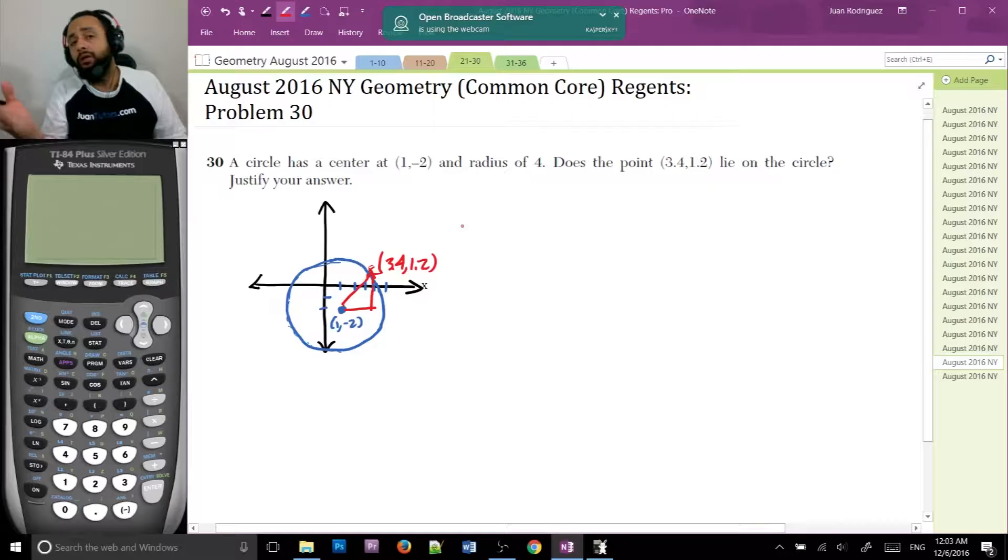Well, they're all a distance 4 from the center, right? That's what the radius is. It's literally the distance from the center to any of the points. So let's use the distance formula to check if that point is a distance 4 from the center, 1, -2.